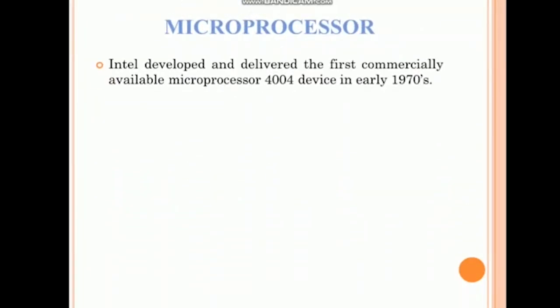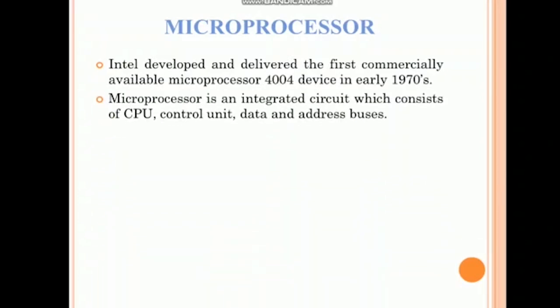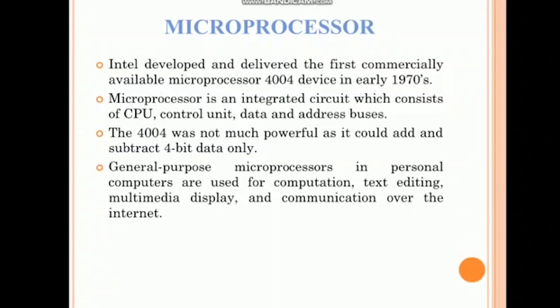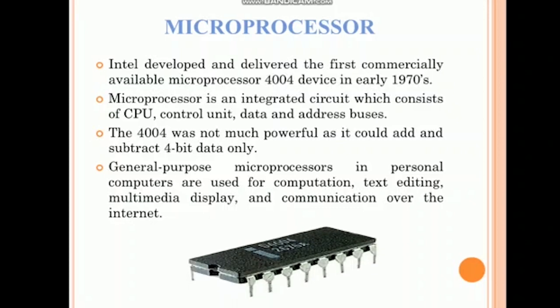The next development was microprocessor. Intel developed and delivered the first commercially available microprocessor 4004 in early 1970s. Microprocessor is an integrated circuit which consists of CPU, control unit and address bus. The 4004 was not much powerful as it could add and subtract 4-bit data only at a time. The 4004 powered on the first portable electronic calculator named Busycom. General purpose microprocessors in personal computers are used for computation, text editing, multimedia display and communication over the internet. This is the image of microprocessor.